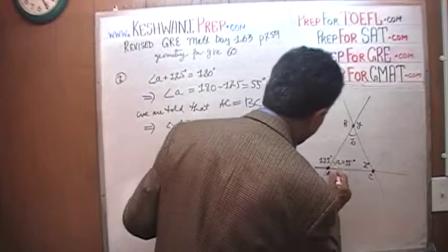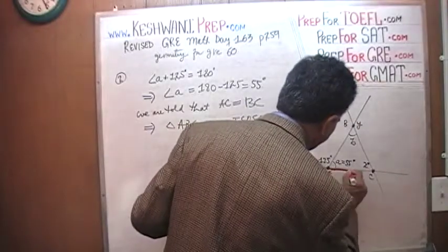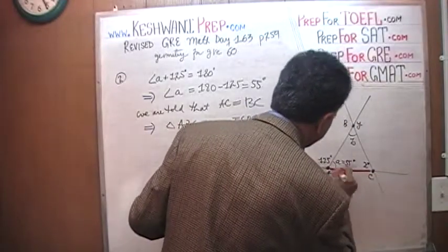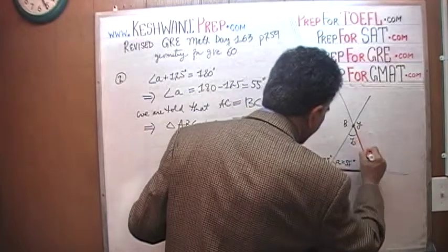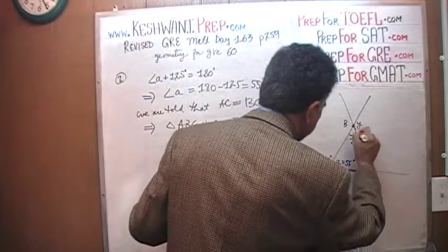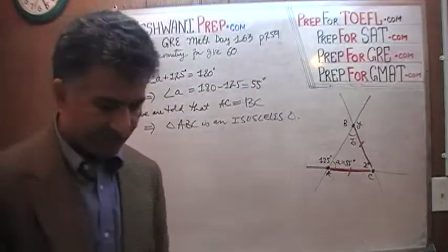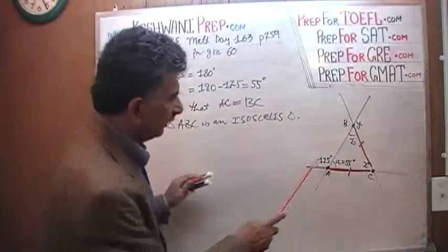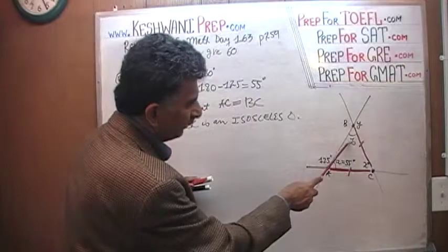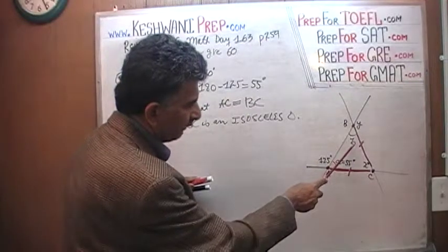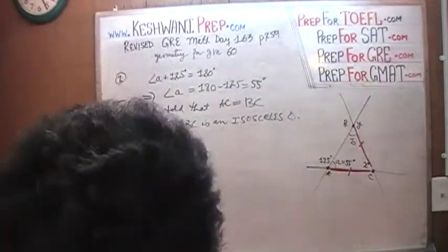This side equals this side, which means if that is the case, in an isosceles triangle if these two sides are equal, these two angles must be equal, which means angle A is equal to angle B.